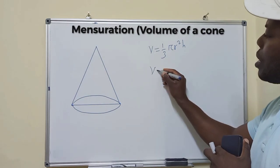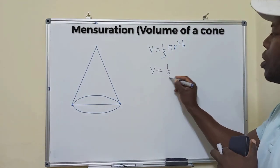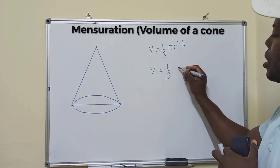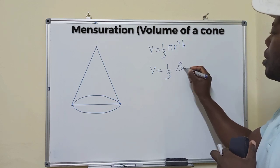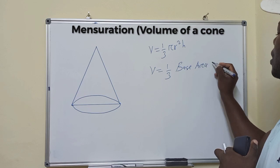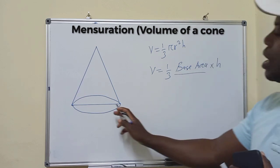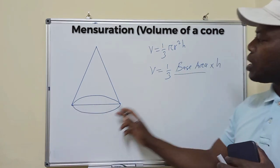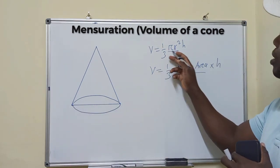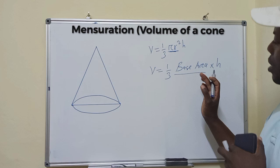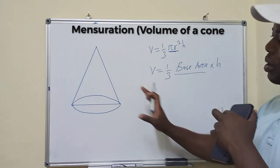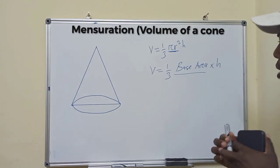At times, they write this formula as 1 over 3 base area times height. So base area, the area of the base right here, which can be calculated using this formula. So this is all about finding volume of a cone.